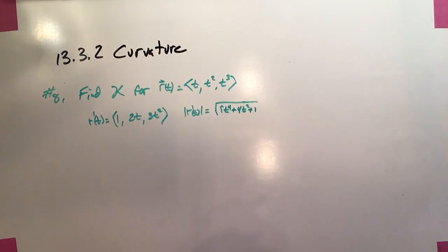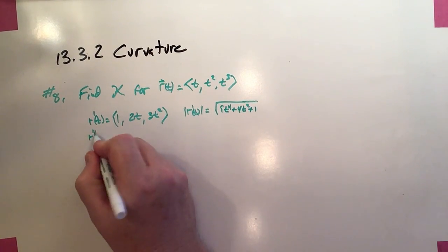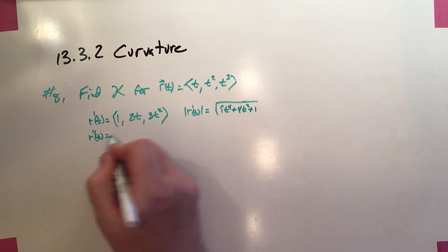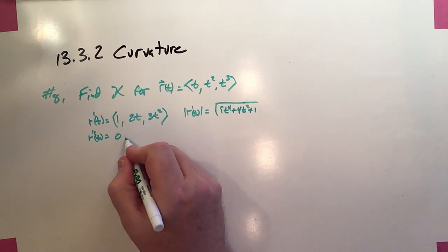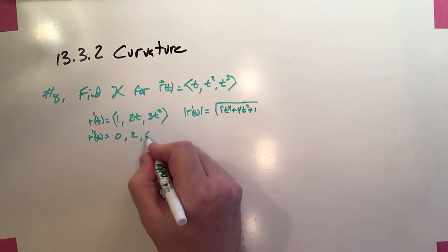This one's a much better one to go ahead and find the second derivative, and that's going to be 0, 2, and 6t.